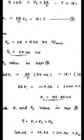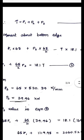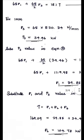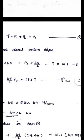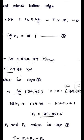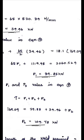Now we know P1 and P3. The remaining unknown is P2. Substituting P1 and P3 into equation 1 — T = P1 + P2 + P3 — and solving gives P2 = 104.78 kN.